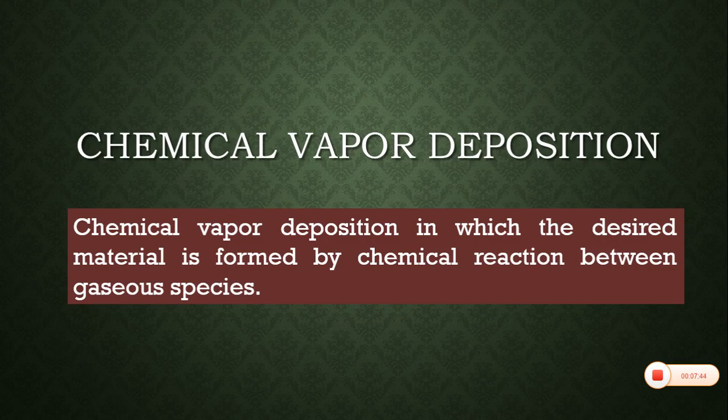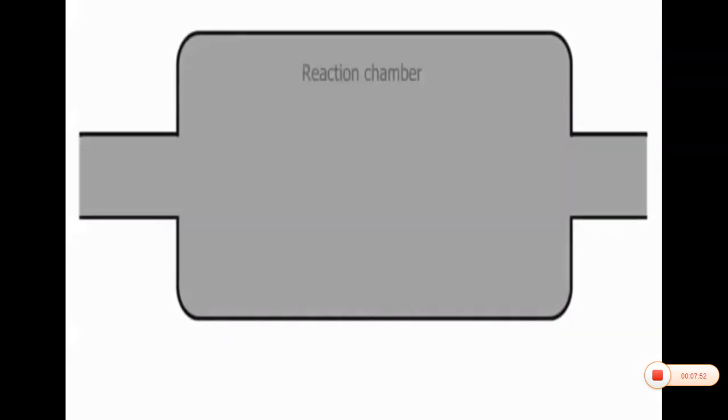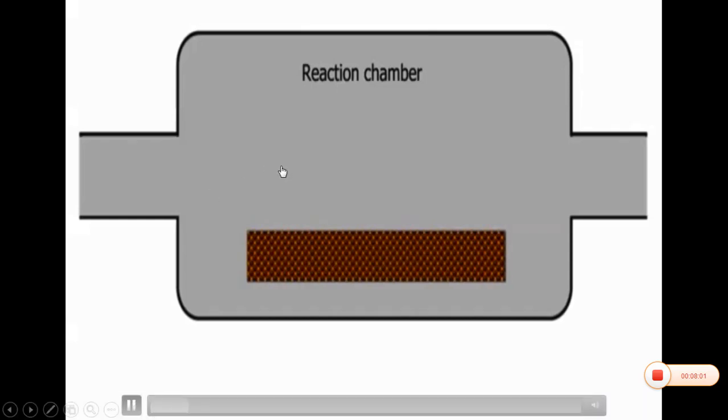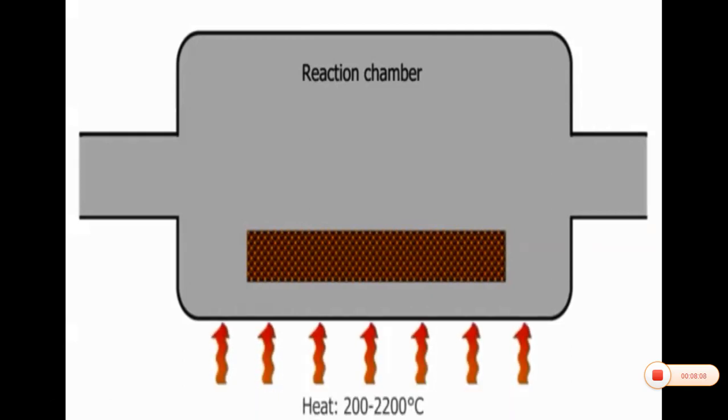Now here we look at how the chemical vapor deposition process actually happens. The vessel in which reaction takes place is a reaction chamber. The substrate to be coated is placed inside the reaction chamber. It could be silicon or silicon dioxide. First, the substrate is heated to desired temperature, which is about 200 to 2200 degrees centigrade. When the substrate reaches its desired temperature...